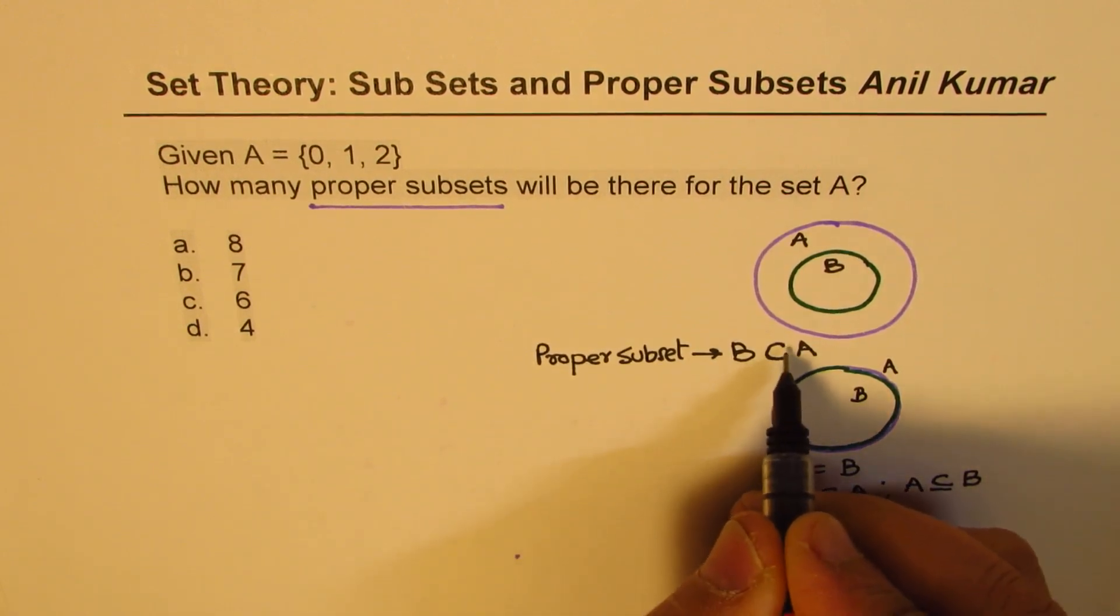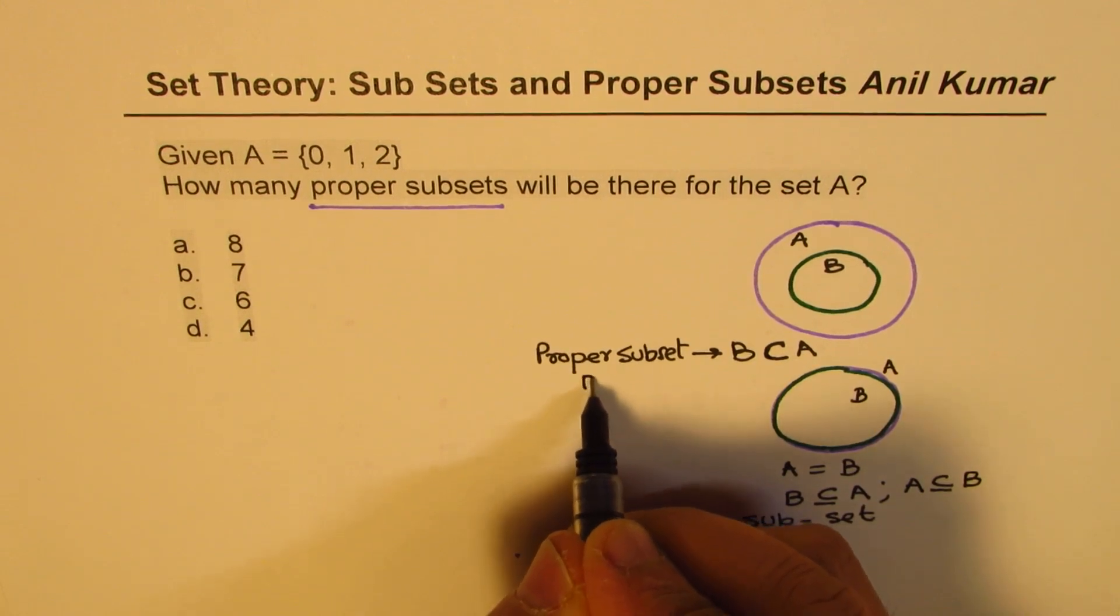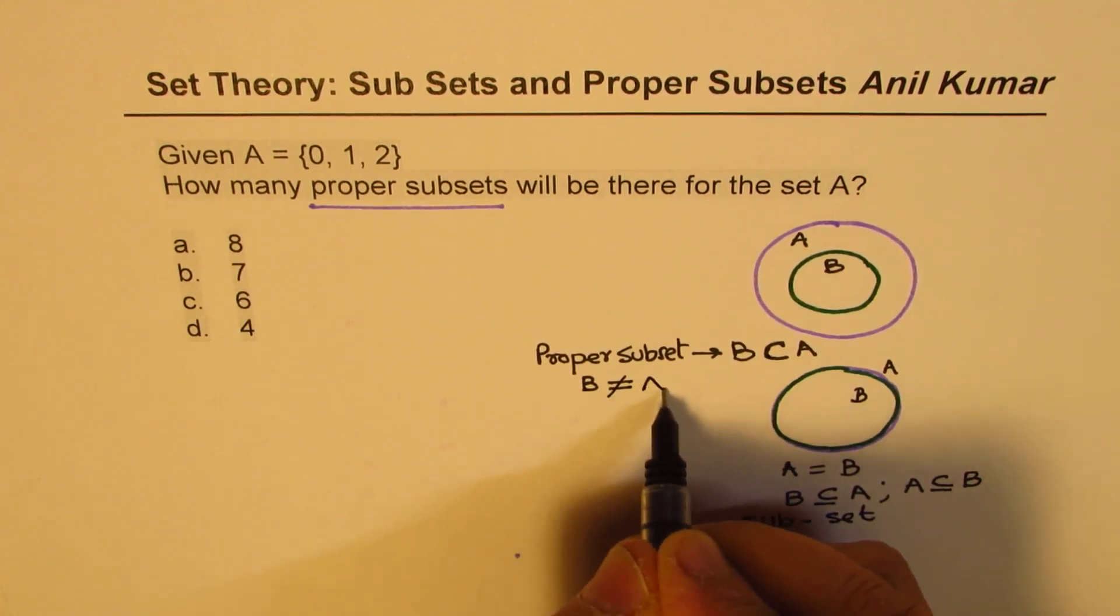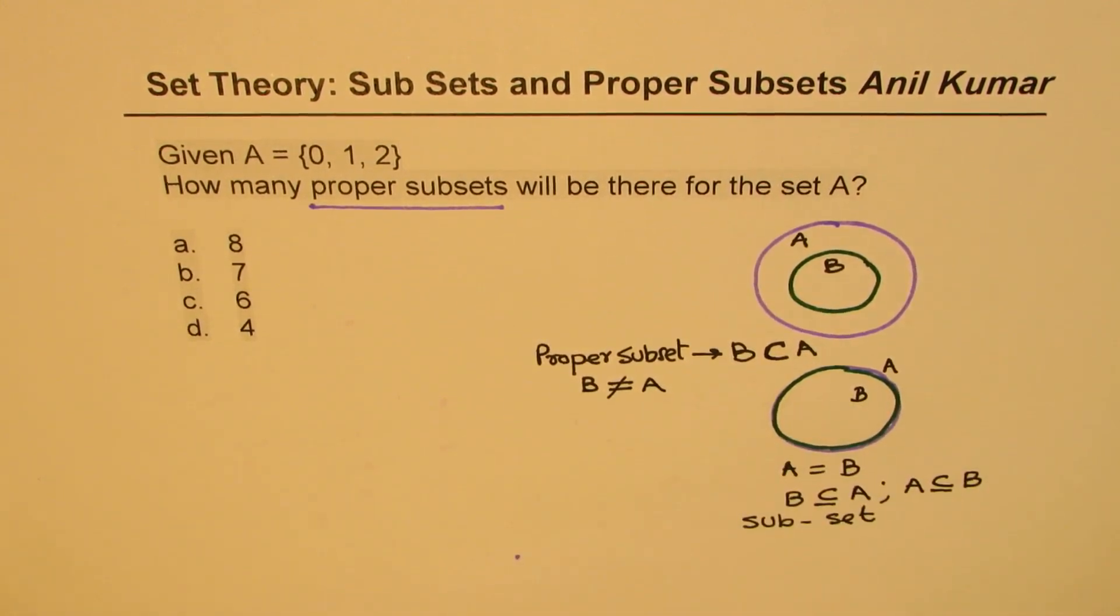So when we say B is proper subset of A it really means that B is not equal to A. B is totally contained in A. So that is the proper subset.